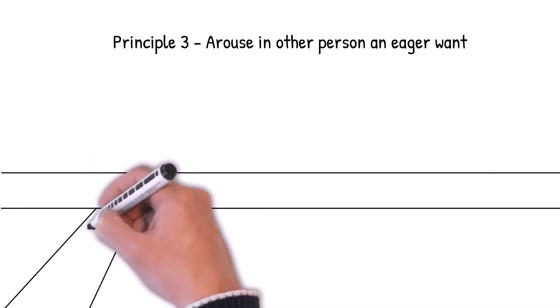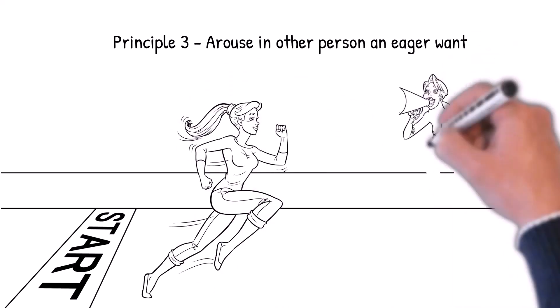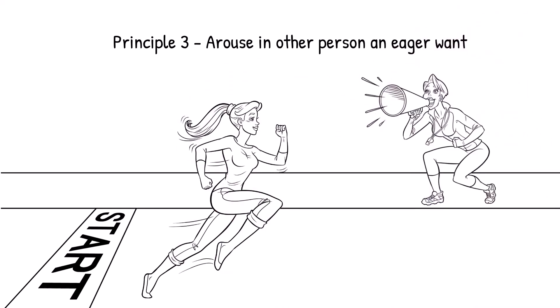Principle 3: Arouse in the other person an eager want. Why talk about what we want? Because the only person interested in what we want is ourselves. To be able to influence other people is to talk about what they want and show them how to get it.